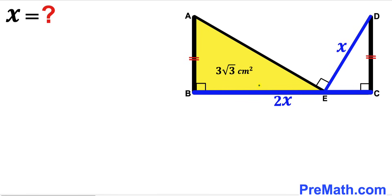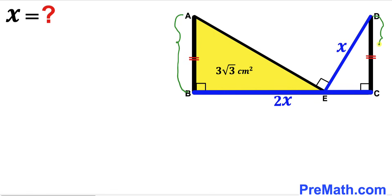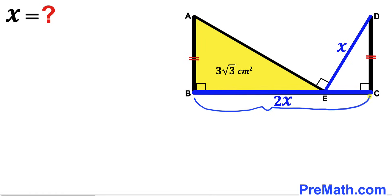Welcome to Premath. In this video we have two right triangles put together, as shown in the diagram, such that the area of the yellow shaded right triangle ABE is 3√3 cm². Moreover, side AB equals side CD. The hypotenuse AE is represented by X, the horizontal side BC is represented by 2X, and there is a 90-degree angle. Our task is to find the value of X.